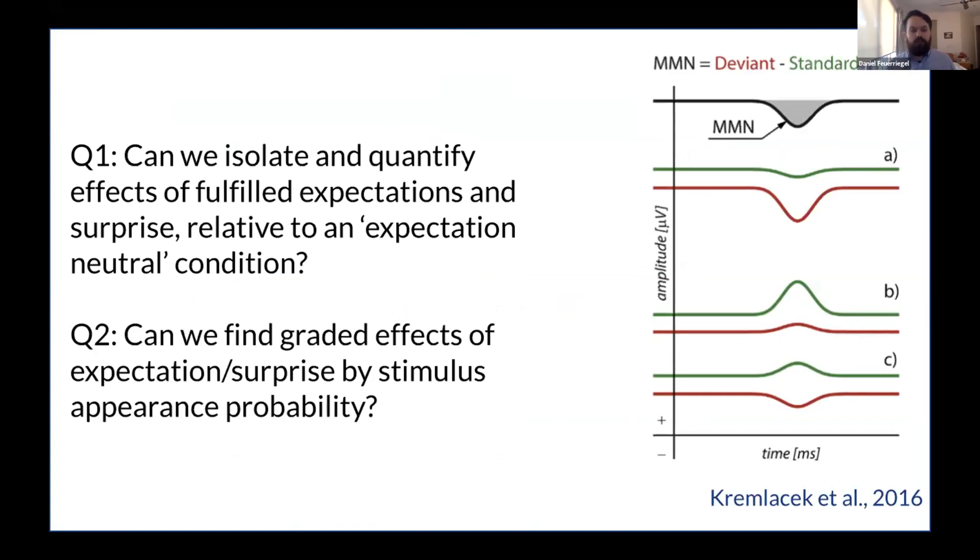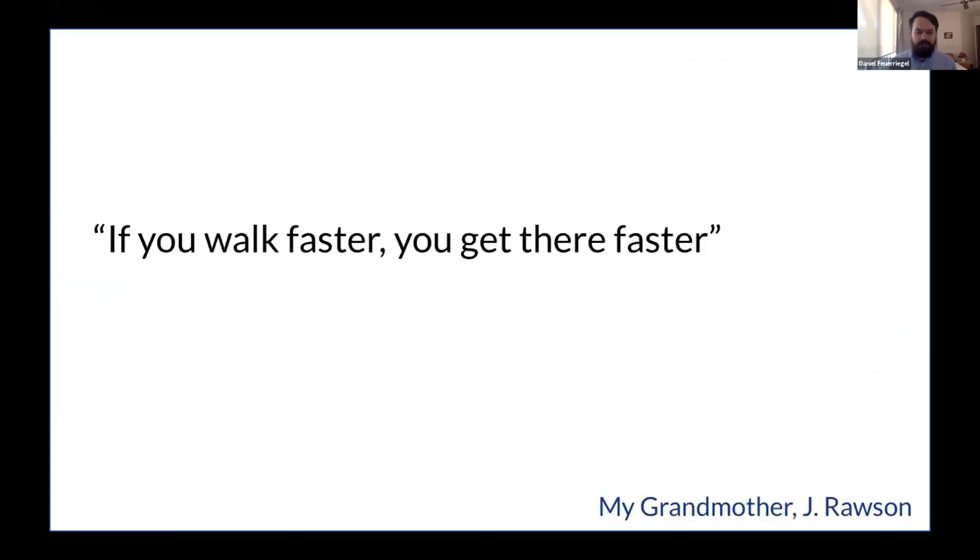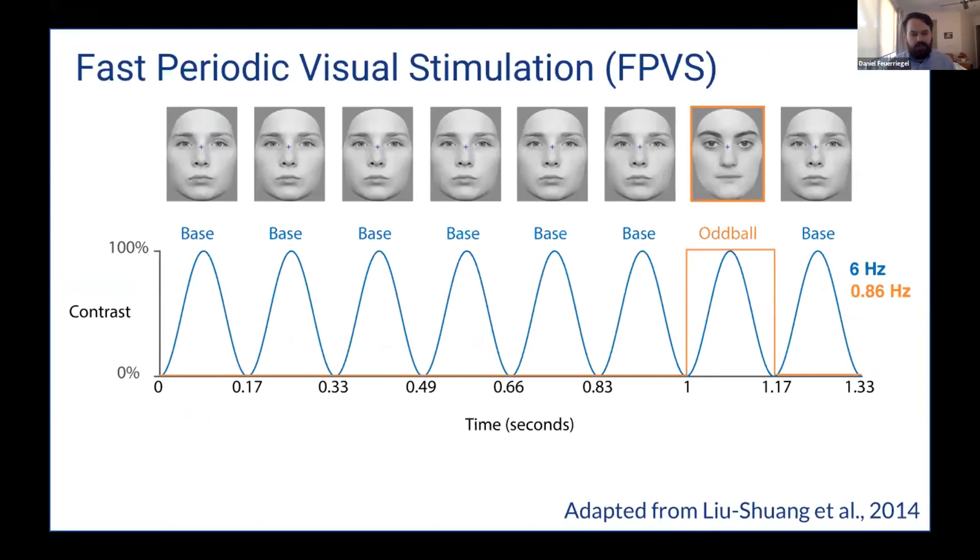And also just to figure out whether we could find graded effects of expectation or surprise by stimulus appearance probability. And this speaks to some theories that would hypothesize that, you know, the objective appearance probability determines how big these effects are. So using existing designs, this would have been very difficult because of the sheer numbers of trials and stimuli that you need to present. And when manipulating appearance probability, this gets even worse. So I took the advice of my grandmother who said, if you walk faster, you get there faster. Accordingly, we used fast periodic visual stimulation or FPVS developed in Bruno's lab. And here's an example from Joanne Lu Shuang's seminal paper, where a base face image, similar to Tyler's design, is presented at a very rapid rate here at six times a second. And then every seventh face image is replaced by a face of a different identity to these base faces known as the oddball. And here I'll specify that in the experiment I'll present, you can have expected or surprising oddballs dependent on this context.